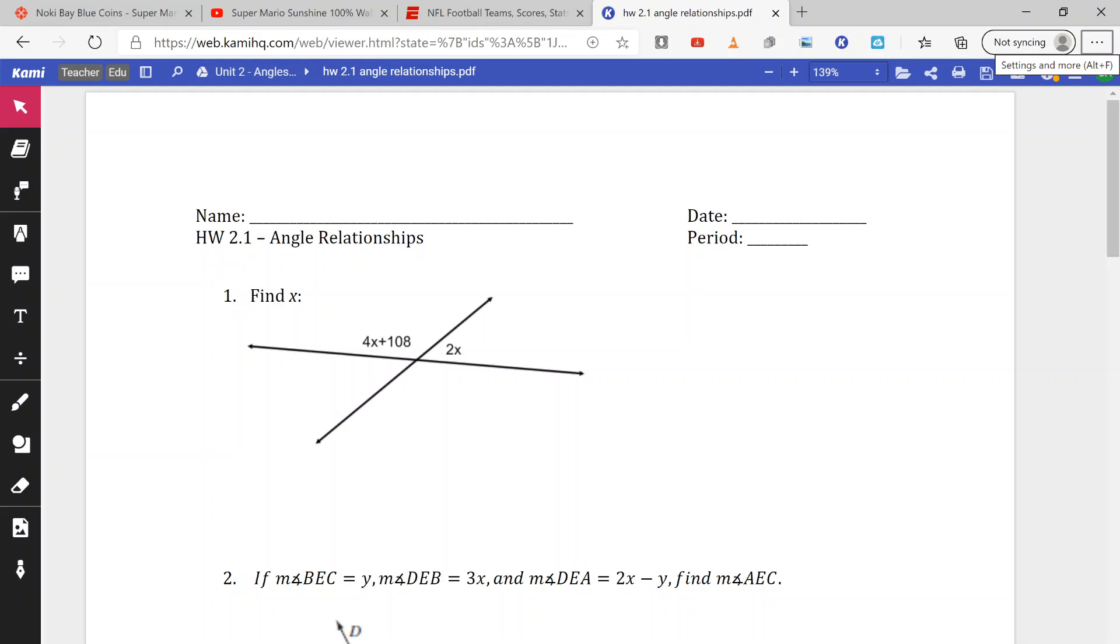The homework for 2.1 is going to go along with what we learned in the lesson, the first lesson of our second unit here regarding angle relationships.